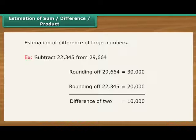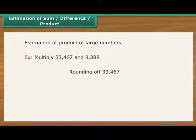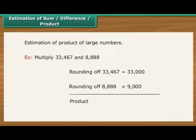Estimation to nearest number can help in the estimation of the product of two large numbers. For example, multiply 33,467 and 8,888. Rounding of 33,467 is equal to 33,000. Rounding of 8,888 is equal to 9,000. Product is equal to 33 into 9 followed by six zeros, which is 29 crore 70 lakhs.